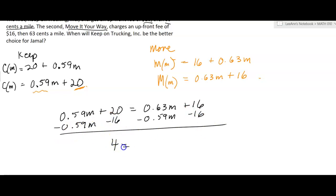I get 4 equals 0.04m. Right? Okay. If I divide by the 0.04. Oops, too many zeros. Oops, extra zero. That would make a difference. Okay. 0.04.